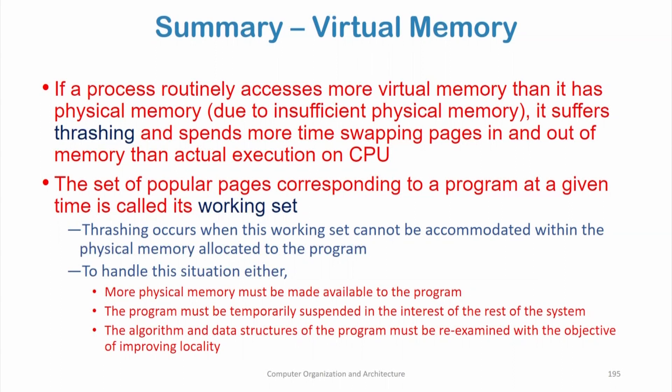If a process routinely accesses more virtual memory than it has physical memory, due to insufficient physical memory, it suffers thrashing. In thrashing, the process spends more time swapping pages in and out of memory than in actual execution on the CPU. The set of pages that a program has accessed in the recent past is called its working set, and thrashing occurs when this working set cannot be accommodated within the physical memory allocated to the program.